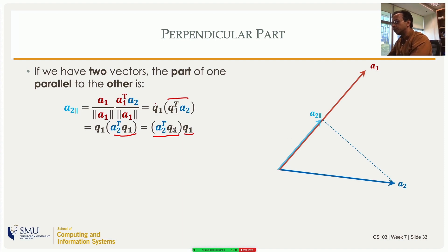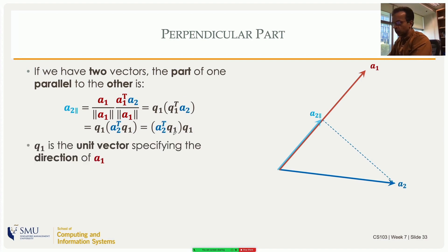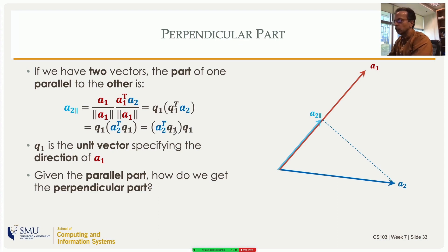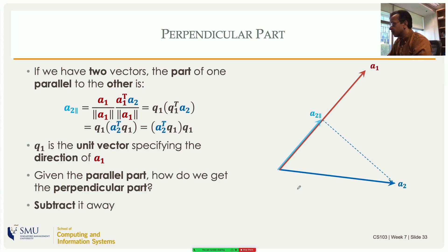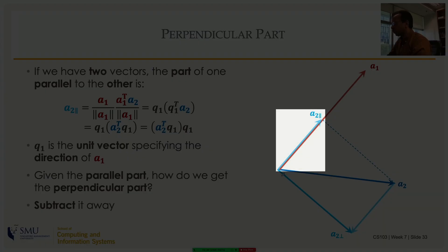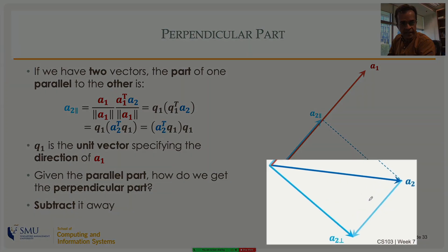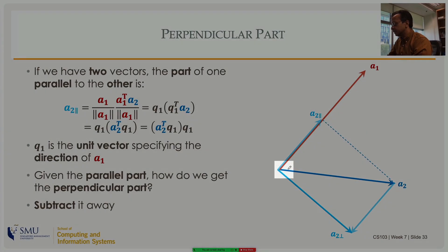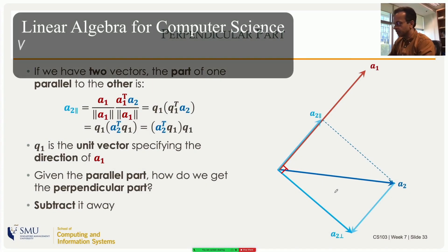q1 is a unit vector specifying the direction of a1, so that is the parallel part rewritten in a convenient form. To get the perpendicular part — what is left of a2 after removing the parallel component — simply subtract a2-parallel from a2. The result is the perpendicular component a2-perp. From the vector diagram, this angle is 90 degrees, confirming the perpendicular part is obtained by subtracting the projection.